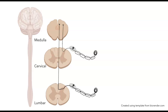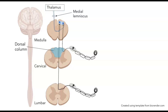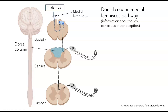No matter the level at which touch receptors enter, they travel through the dorsal column all the way to the medulla, where they make synapses onto second-order cells in nuclei in the medulla, which then project to the thalamus. The tract from the medulla to the thalamus is called the medial lemniscus, which is why the overall pathway is called the dorsal column medial lemniscal pathway. This is how we process information about touch as well as conscious proprioception.